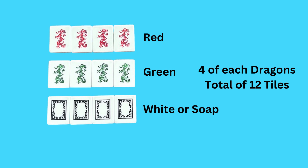Legend has it that many years ago, players reached out to the National Mahjong League requesting that they change the name of the white dragon to soap, stating that the white dragon tile looked a lot more like a small bar of soap than its name, White Dragon. The league decided that they would allow the use of the name soap in addition to white dragon. So today, when we discard a white dragon tile, it is acceptable to say either white or soap.